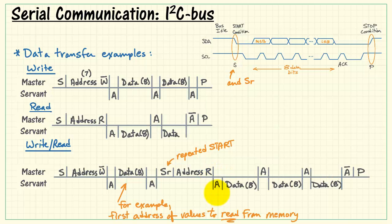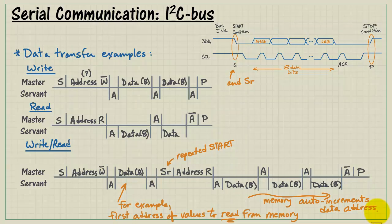The servant will then do an acknowledge, and at this point it begins transmitting data, as we did in the previous read example. Each of these is followed by the acknowledge, and finally a NACK at the end to signal the end of the data transfer. This is assuming that the memory auto increments its data address.